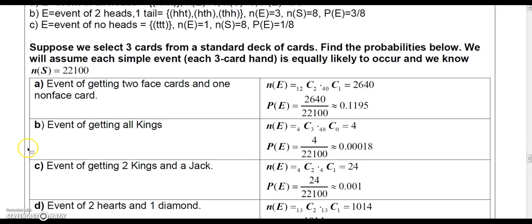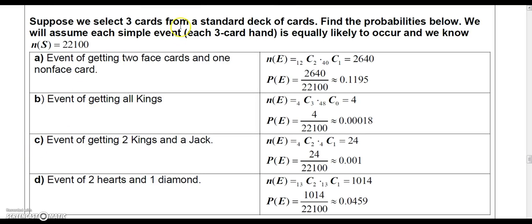Let's look at a different experiment. Suppose three cards are drawn from a standard deck of cards. And we're going to find the probabilities below. And we will assume that each simple event, each three-card hand, is equally likely to occur. And you know that the number in the sample space is 22,100.